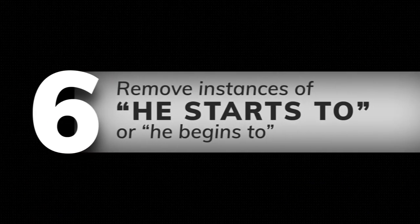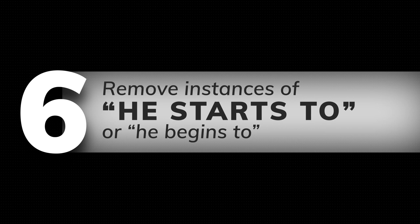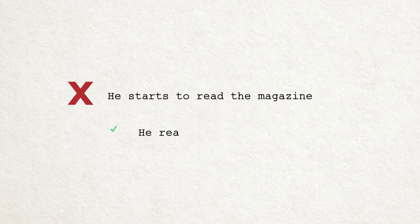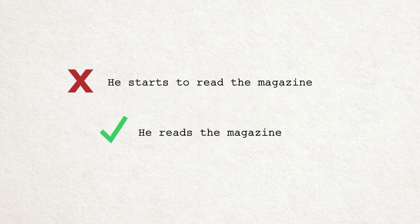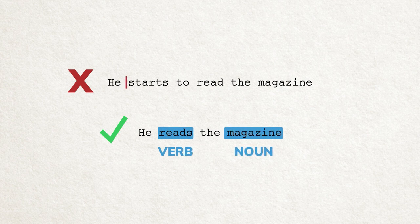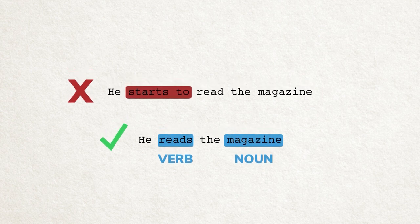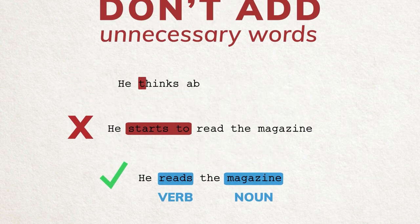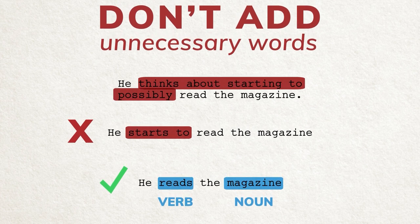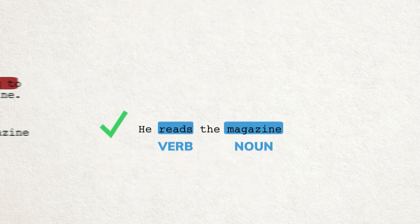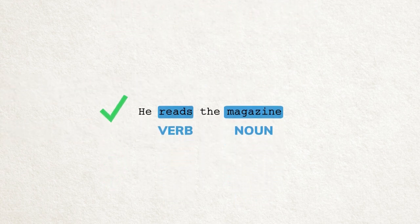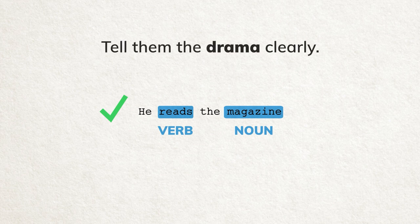Number six: remove any instance of 'he starts to' or 'he begins to.' For example, replace 'he starts to read the magazine' with 'he reads the magazine.' Always focus your sentences around the key noun and key verb. We don't need 'starts to' — just the noun and verb. Don't add unnecessary words like 'he thinks about starting to possibly read the magazine.' You can add these fake verbs all day long, but write clean sentences. Get to the point. Your reader wants to know what is happening, so tell them the drama clearly.